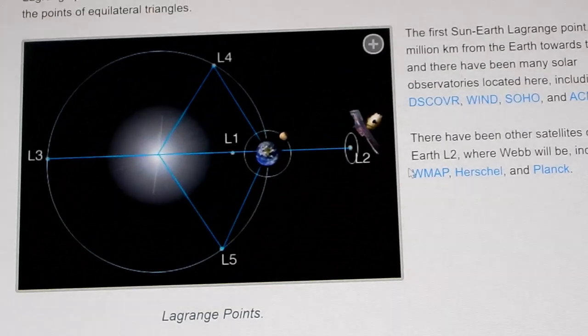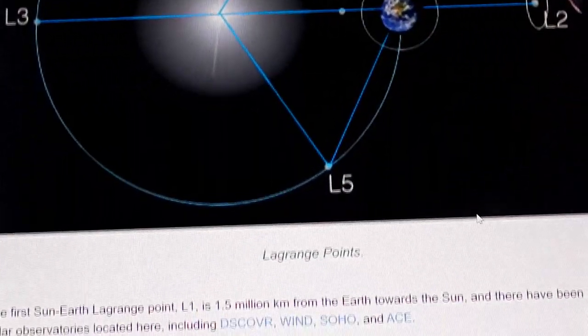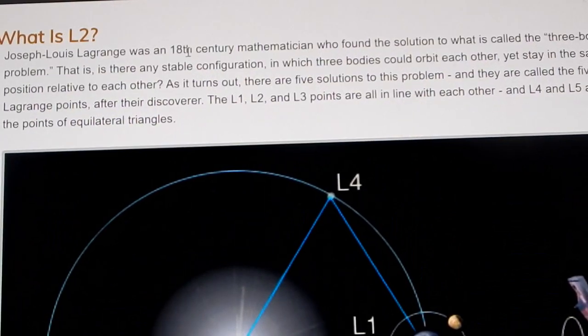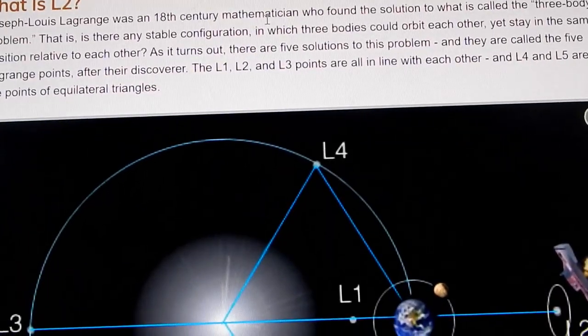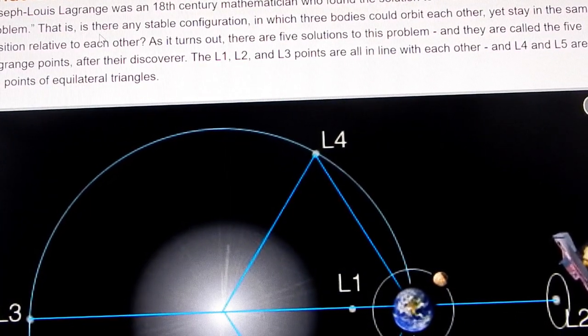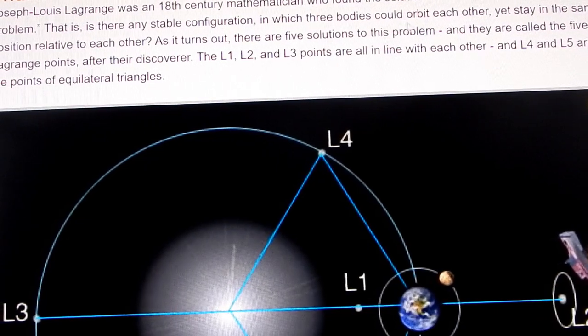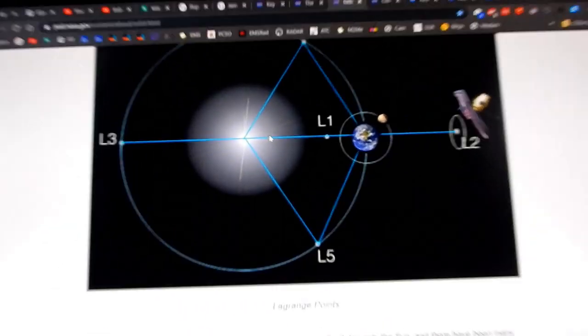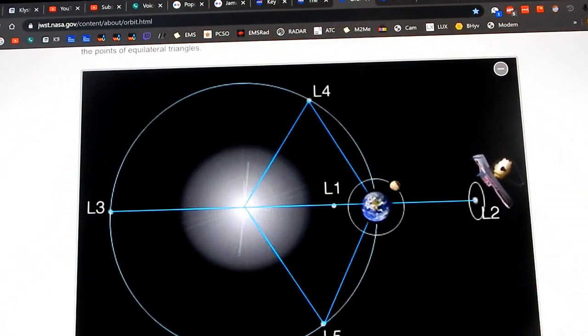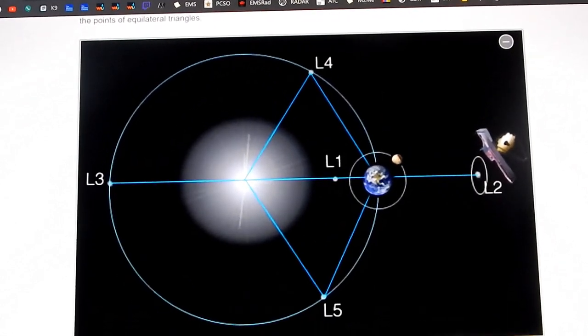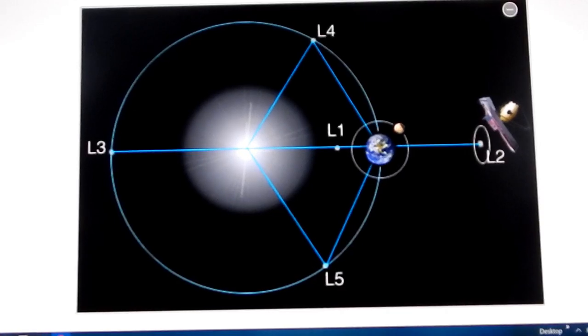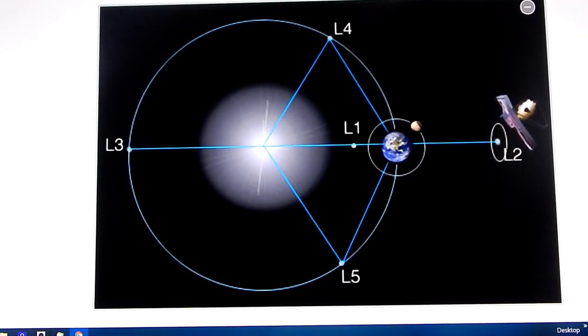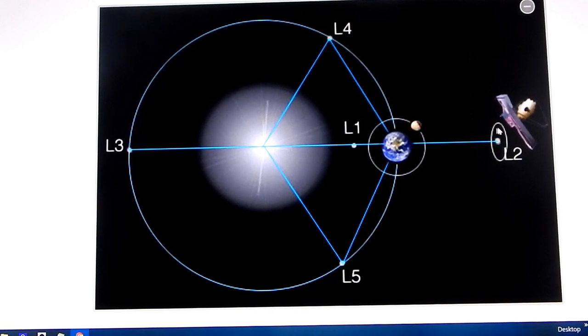All right, let's take a look at the orbit where this thing's gonna be parked and why it's important. The L2 point. This was figured out by astronomer Lagrange, Joseph Louis Lagrange, 18th century mathematician, found the solution to what is called a three body problem. That is there are stable configurations in which three bodies could orbit each other yet stay in the same position relative to each other. And the whole purpose of this is to put something into space that's gonna stay there. Much like a geostationary orbit on Earth where you're balancing out the gravitational pull of the Earth given the centrifugal force of the orbit and it just stays in one spot.